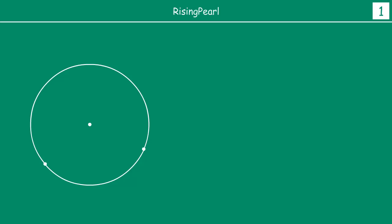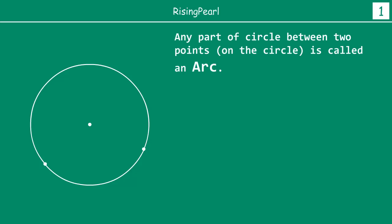Now we know this is a circle, and what we do is we take any two points on the circle. The part of the circle between the two points which are on the circle is called an arc. So we have a circle with center O, and we took any two points — let's call this point A and let's call this point B.